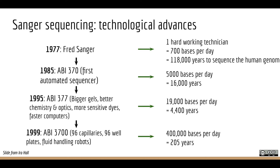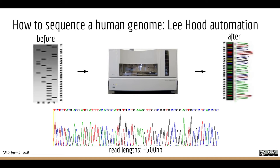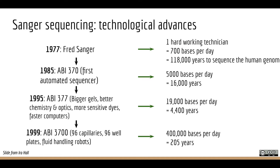From 1977 all the way to 1999: Sanger came up with his technique in 1977, and one hard-working technician or grad student could knock out about 700 bases a day. To sequence the human genome would take 118,000 years for one person. With Lee Hood's innovations we scaled up in 1999 to about 400,000 bases per day using the Applied Biosystems sequencer.